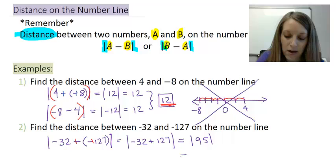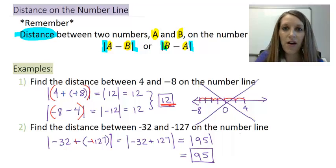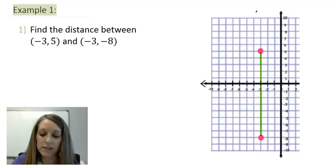And the absolute value of 95 is 95. So the distance between these two numbers on the number line is 95 units away from each other. So now that we've reviewed how to find distance in one dimension, let's see how this is applicable when we create it in two dimensions or on our graphing system.